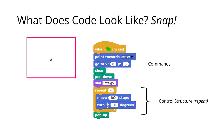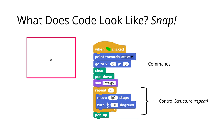Let's look at what this code does. The first instruction is: when the flag is clicked, point towards the center, then go to x=0, y=0 — resetting the arrow to the middle. Then we clear what's been drawn, put the pen down. Now we have a control structure: 'repeat 4.' Whatever is in this block is repeated 4 times. We move 100 steps, turn 90 degrees, move 100 steps, turn 90 degrees — and so on four times. Then pen up.